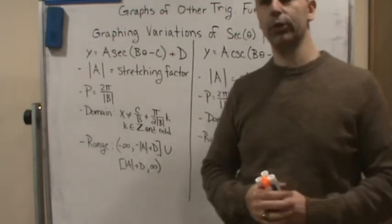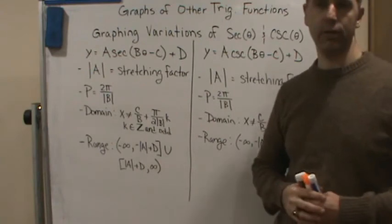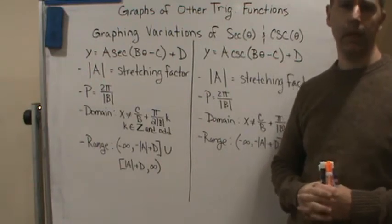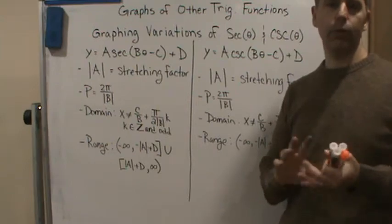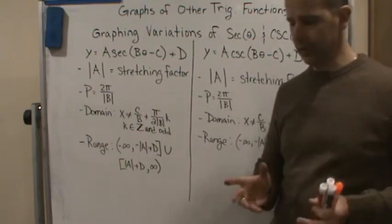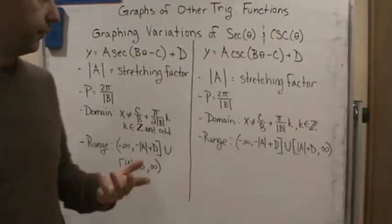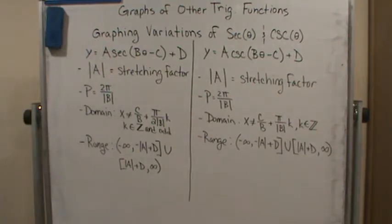Welcome back. Now we're going to talk about graphing variations of secant and cosecant functions. This includes vertical and horizontal shifts and involves all the different transformations that we discuss.